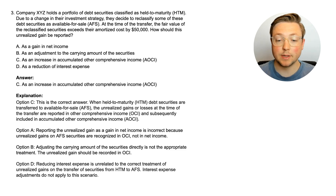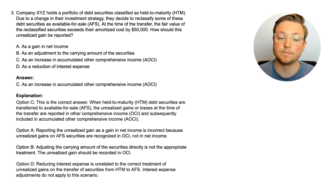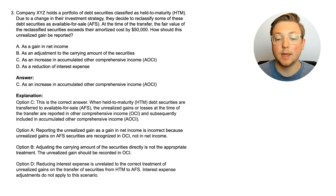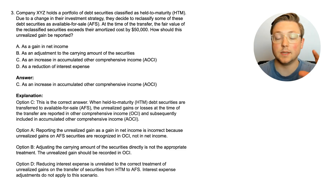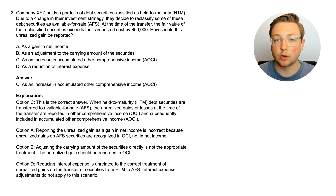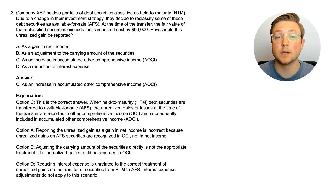The answer is C: as an increase in accumulated other comprehensive income. When held-to-maturity debt securities are transferred to available-for-sale securities, the unrealized gains or losses at the time of the transfer are reported in OCI and subsequently included in AOCI. If you decide these held-to-maturity securities will now be classified as available for sale, any unrealized gain from that reclassification is part of OCI — it's not included in net income.